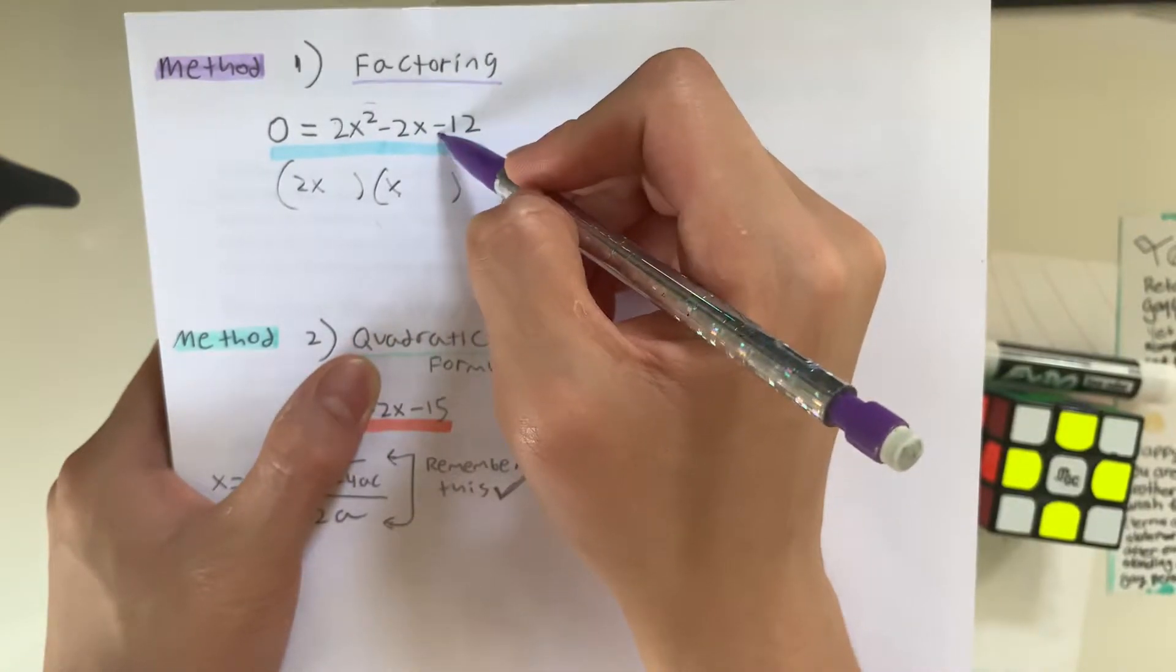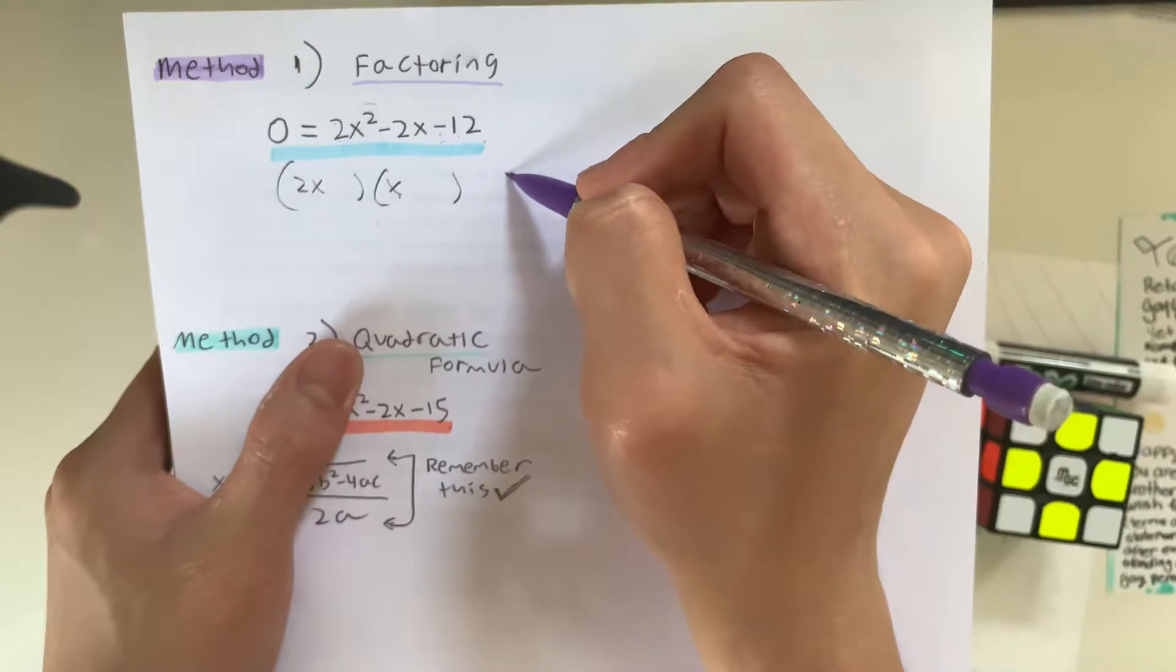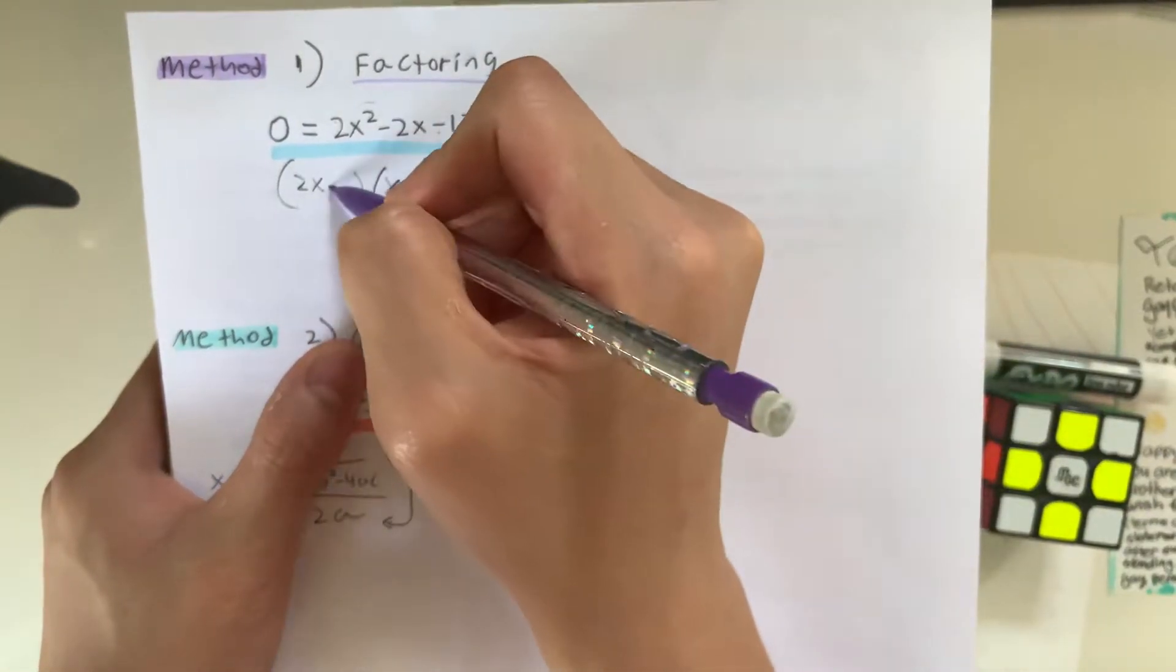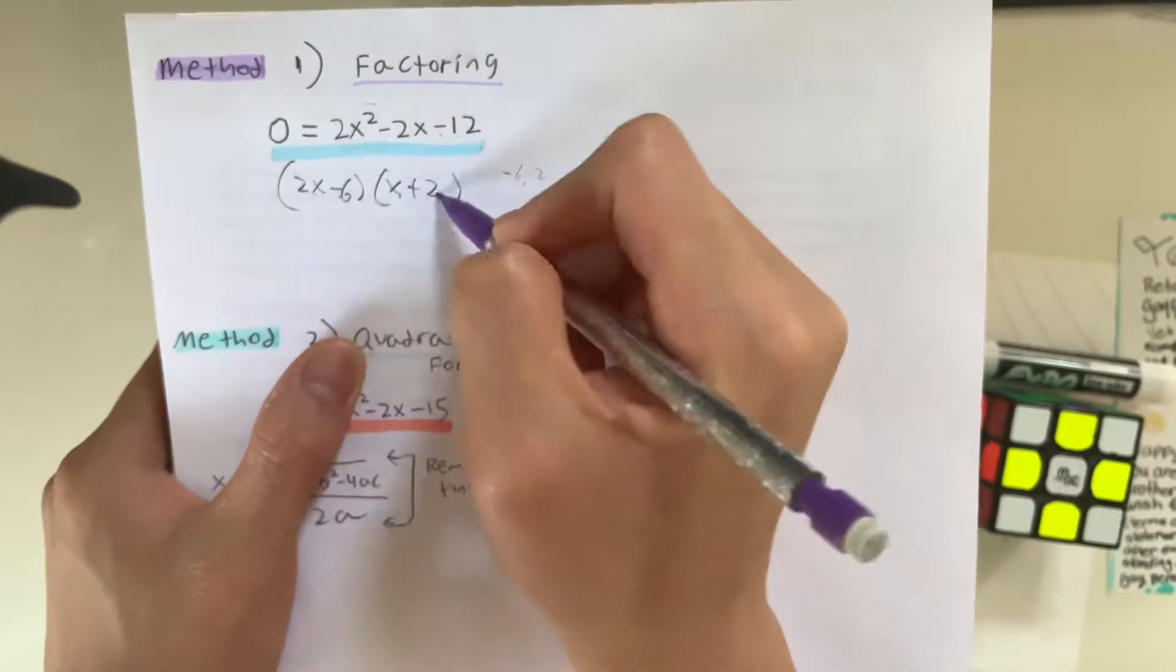And now, let's see, what can make 12? Negative 12. That's equal to negative 6 and 2, maybe, yep. So, that's negative 6 plus 2, and that is it.